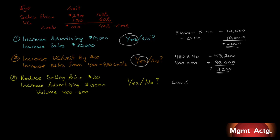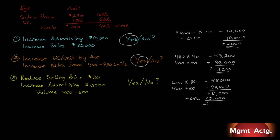Watch how easy this is. We're going to sell 600 units, but our contribution margin is not $100 anymore because we reduced our selling price by $20 — our contribution margin per unit is only $80. So our total contribution margin will now be $48,000. Previously it was 400 times $100, or $40,000. So our contribution margin increases by $8,000. But we have to subtract the increase in fixed costs of $15,000. We end up with negative $7,000. Should we do it? No.